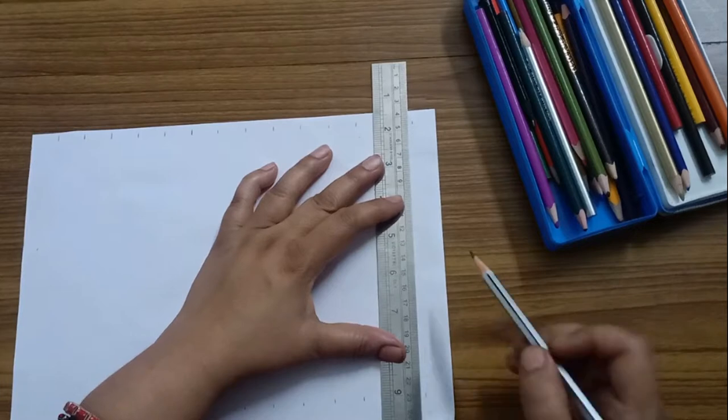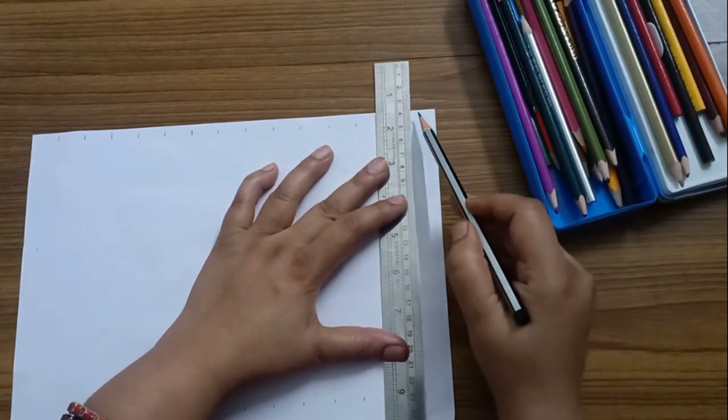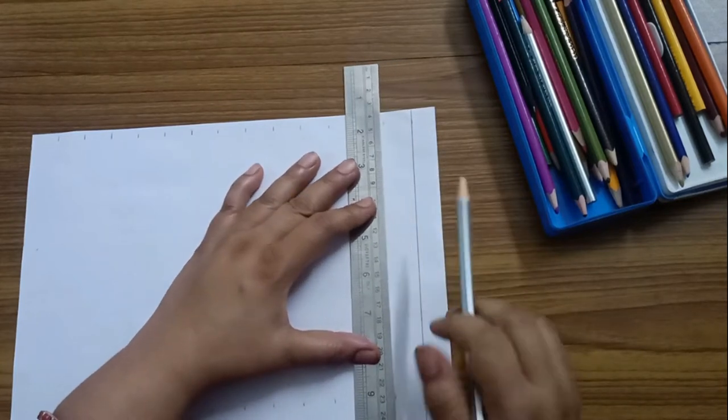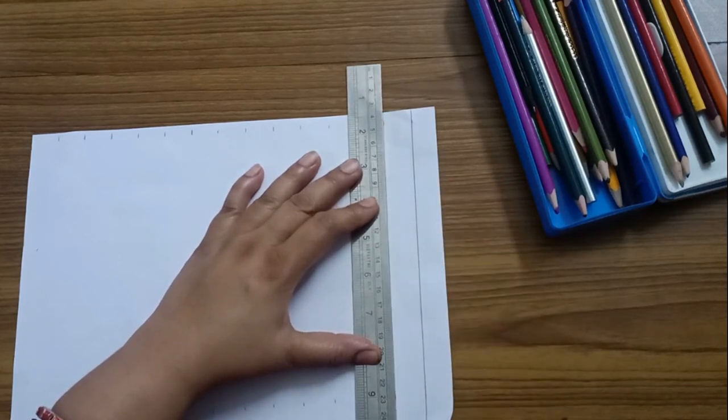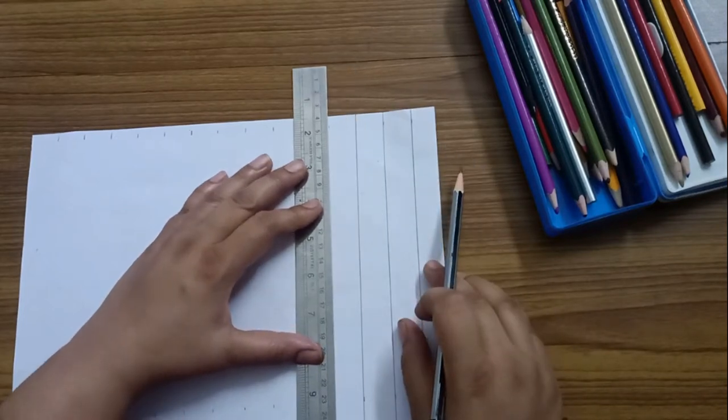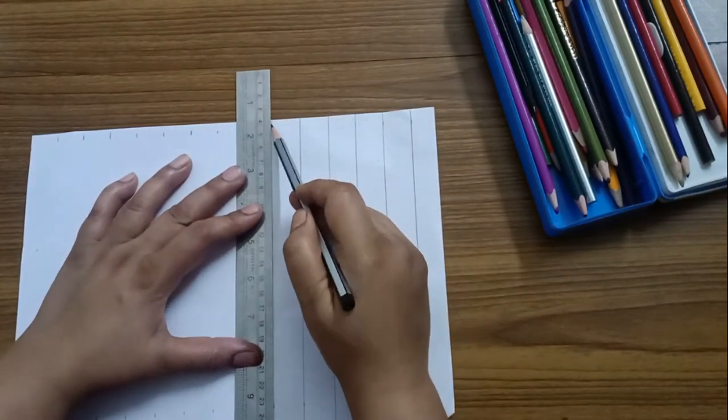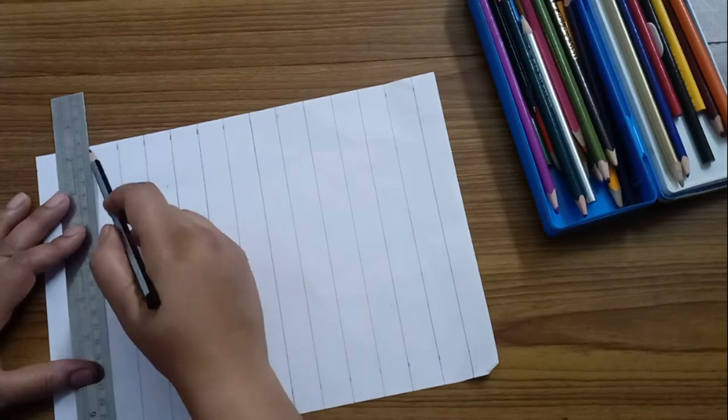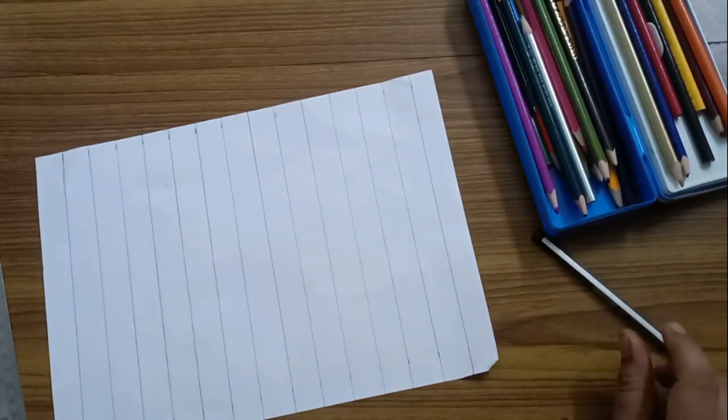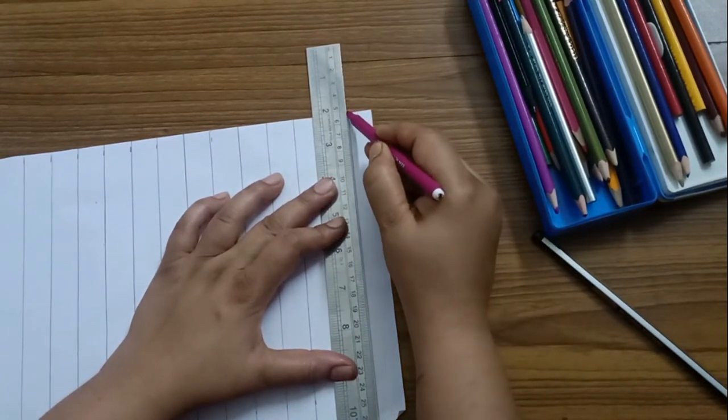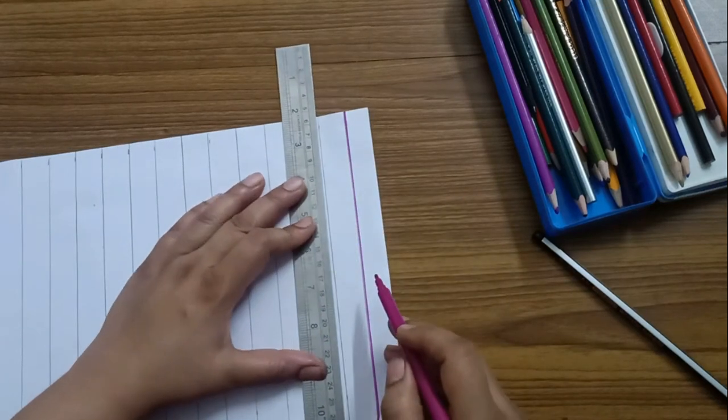Now, next we will join these 2 marks. Join like this. Use a pencil and join these 2 lines. Now, if you want, you can highlight these lines by sketch frames. Here I am using this color, you can use any color you want. Here I am doing nothing but just highlighting it.